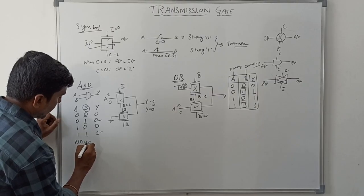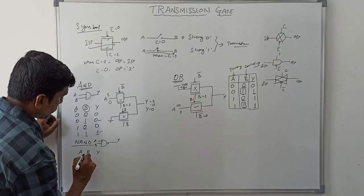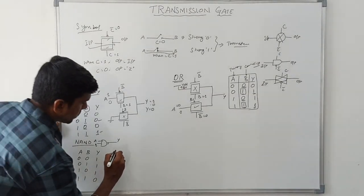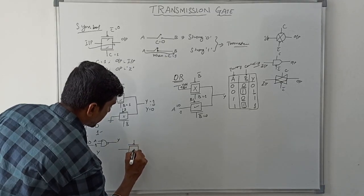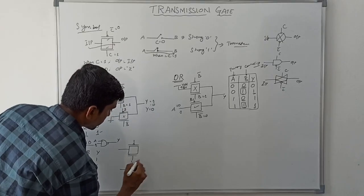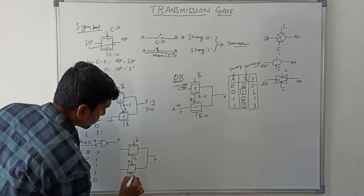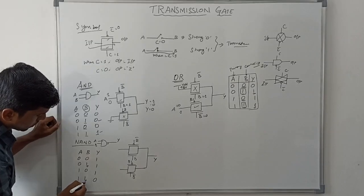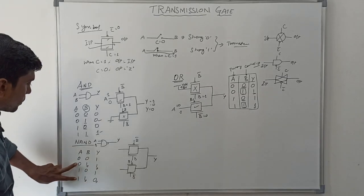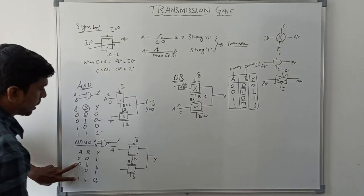Now I am going to draw the NAND gate. The symbol of NAND gate has inputs A, B and output Y. The truth table for NAND gate is: 0,0→1; 0,1→1; 1,0→1; 1,1→0. To design the NAND operation using transmission gate, we need two transmission gates with outputs shorted to get the final output. B is the control signal. When B equals 1, for A equal to 0, output is 1, and for A equal to 1, output is 0. So when B equals 1, output equals A-bar (complement of A). The first transmission gate is connected to A-bar.